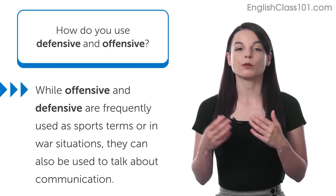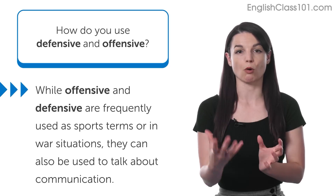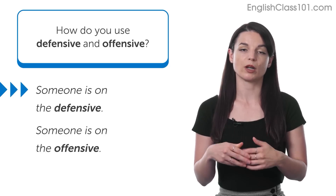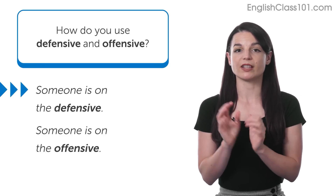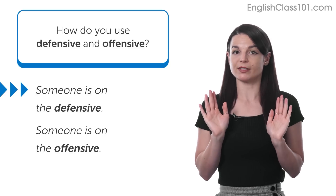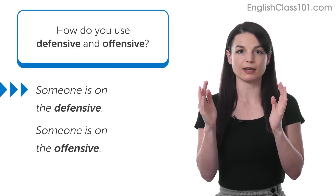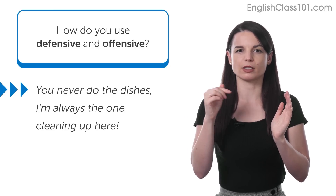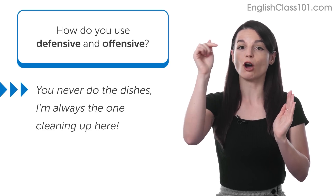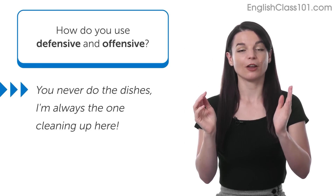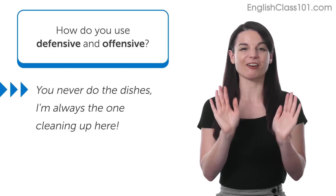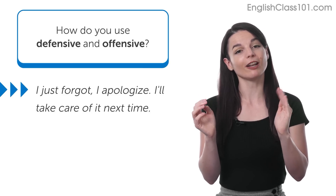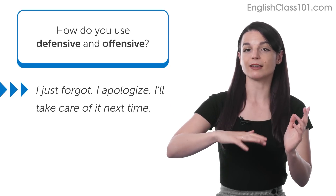What's interesting about these words is that we don't just use them to talk about sports, war, or battles. We also use these words to talk about our communication. We sometimes say that someone is 'on the defensive' or 'on the offensive' when they attack someone with their words or when they're trying to defend themselves. For example, if you have a fight with your roommate who says, 'You never do the dishes, I'm always the one cleaning up,' we could describe that person as going on the offensive — they're attacking you. You, on the other hand, are on the defensive side. You want to defend yourself: 'I'm so sorry, I've been really busy lately' or 'I just forgot, I'll take care of it next time.' So you are defending yourself.